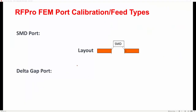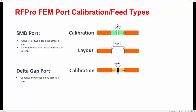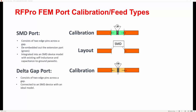Now let's shift our focus to differential ports within AlphaPRO, especially the SMD and delta-gap types. These two port types are frequently utilized with Momentum, especially in conjunction with vendor models like Morata. Both SMD and delta-gap ports share a commonality — each features two edge pins across a gap or operates as a delta-gap pin. Connected to an SMD device, the distinguishing factor is their calibration after extending the two edges of transmission lines until they touch one another. Delta-gap is directly connected with an SMD model afterwards, but for SMD type ports, it will de-embed the extension, removing the self-impedance of the transmission line.